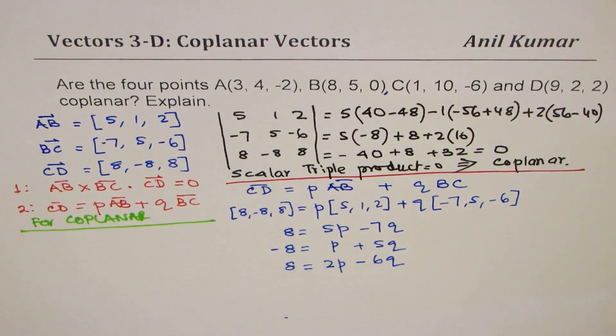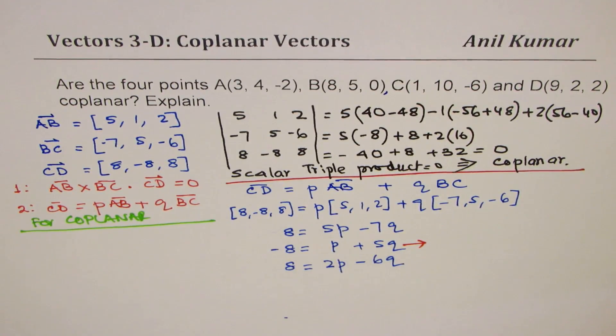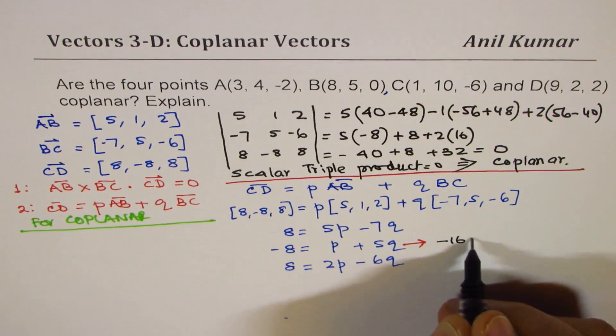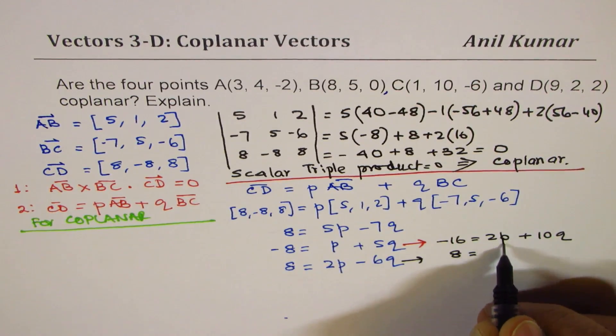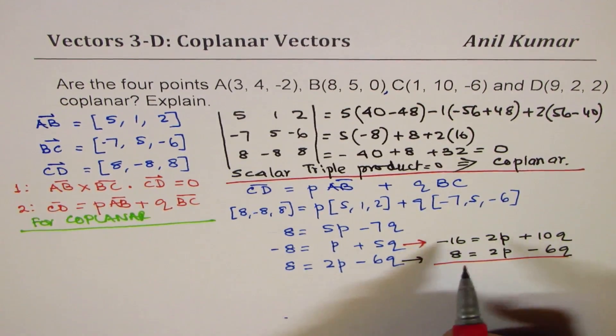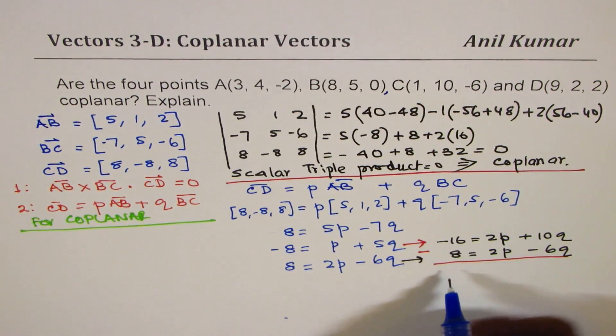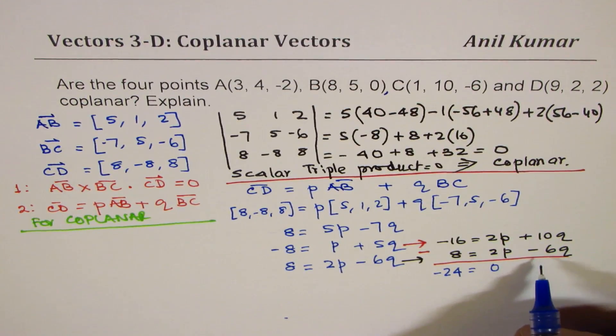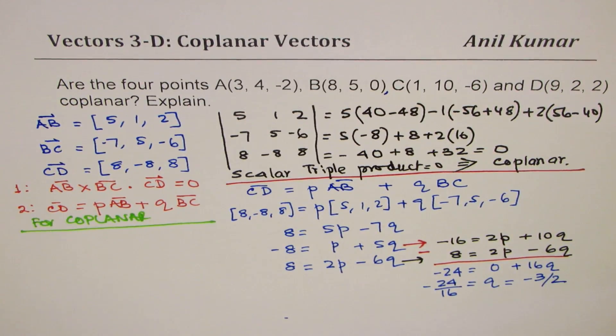So we have two variables, so we could use two equations. Let me rewrite the second equation times 2. So if I do times 2, I get -16 = 2P + 10Q. And the third equation I'm copying as such, which is 8 = 2P - 6Q. Now from these equations, I could eliminate P by taking away one from the other. So when I do this minus this, I get -24 = 16Q. So Q equals -24 over 16, which simplifies to -3/2.